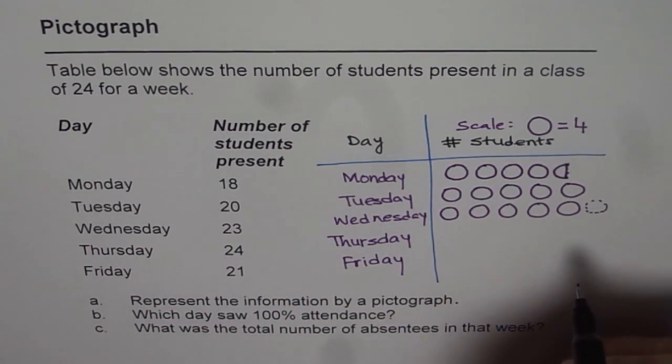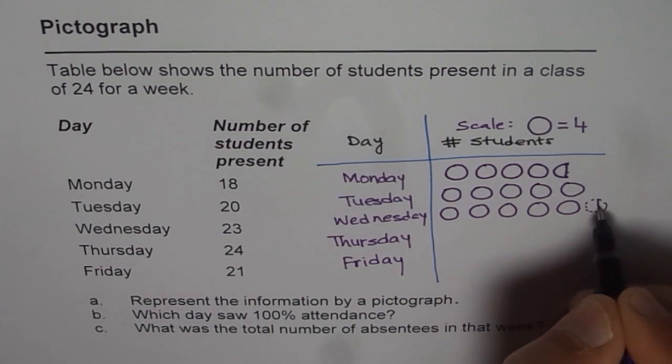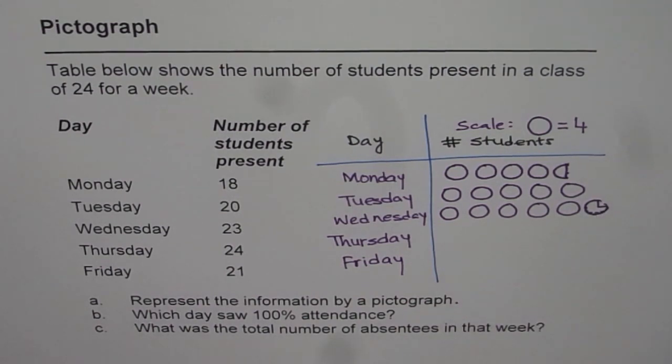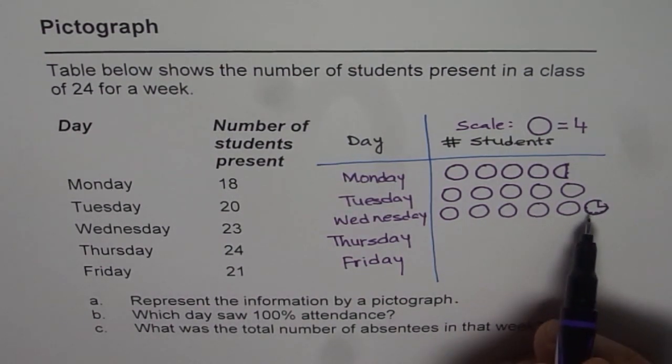1 full circle gives us 4. How can I draw 3? So that means we will take 3 quarters. So if I draw 3 quarters of a circle, it means 3 not 4. So we have left 1 quarter. So that makes it 3.